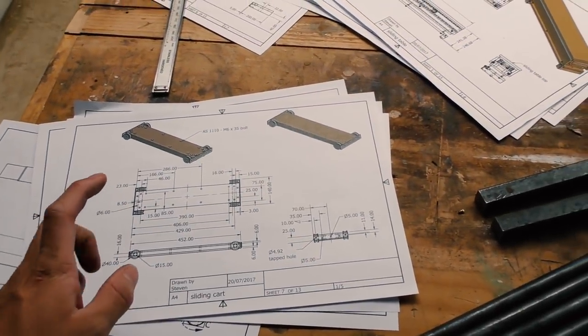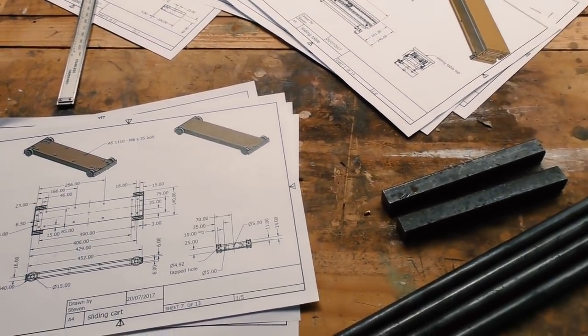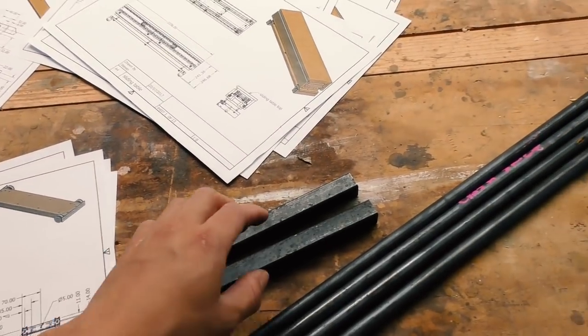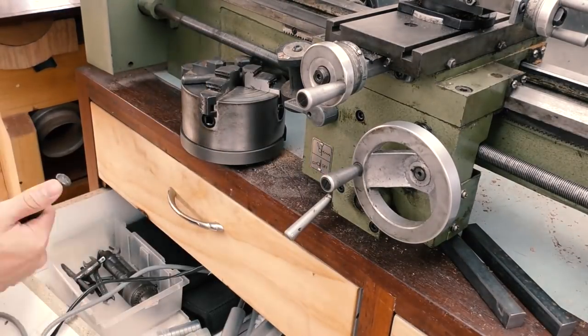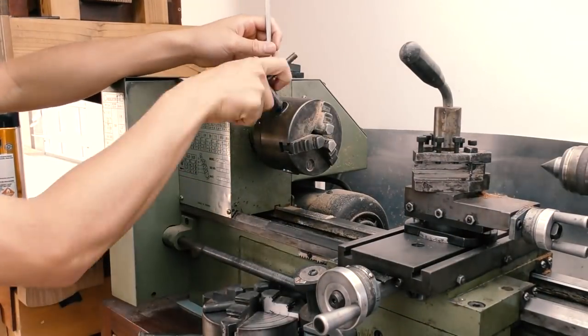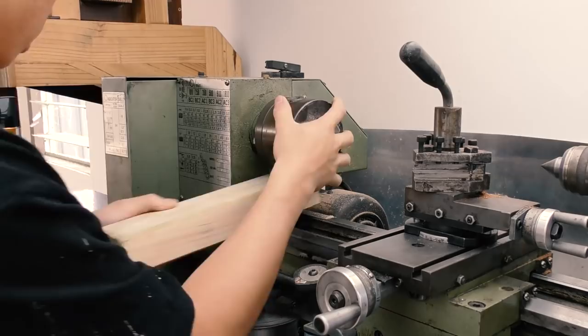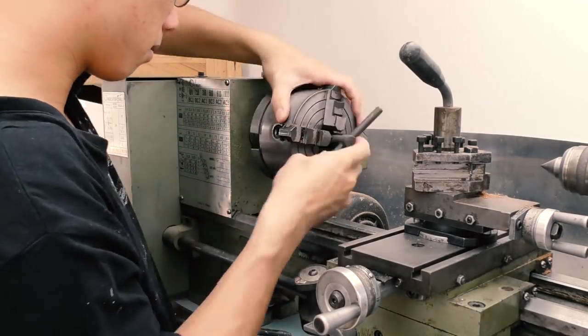To start, I'm going to be making a sliding cart that goes between the two halves, which is legitimately the hardest part of the project as I'll need to turn round ends on this square stock to fit a bearing precisely, and I'll need to repeat this perfectly four times, which has never happened before.